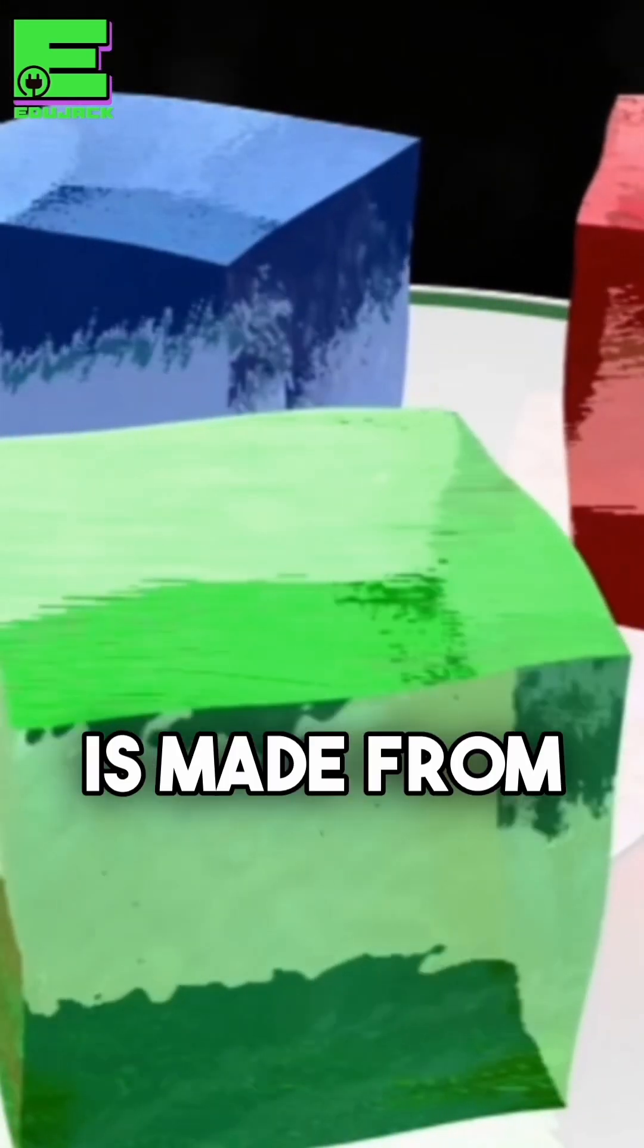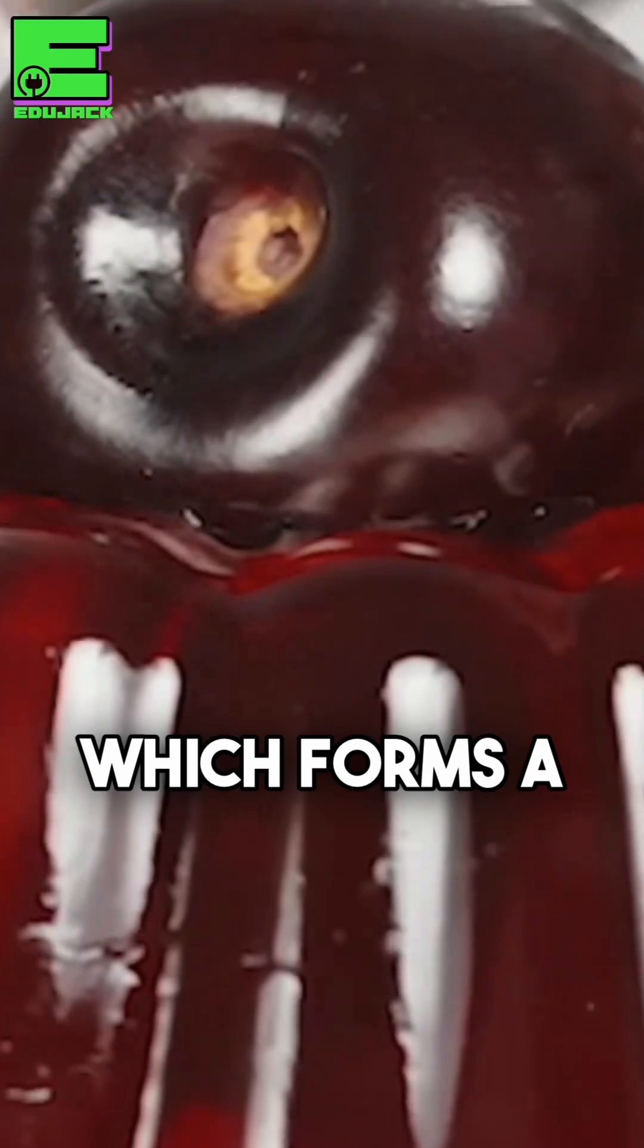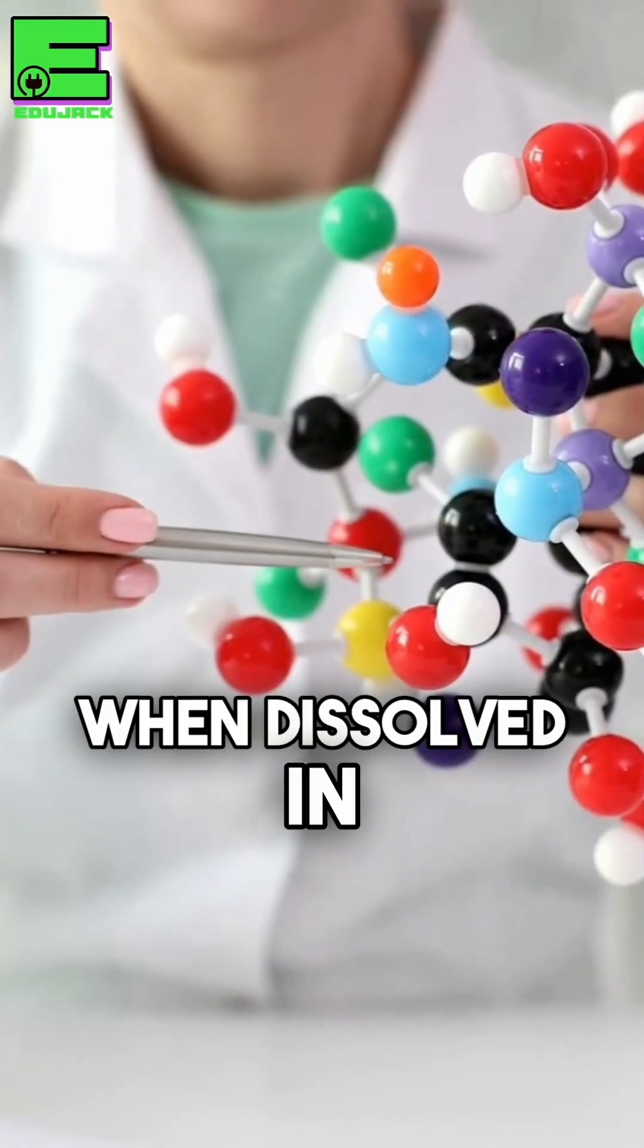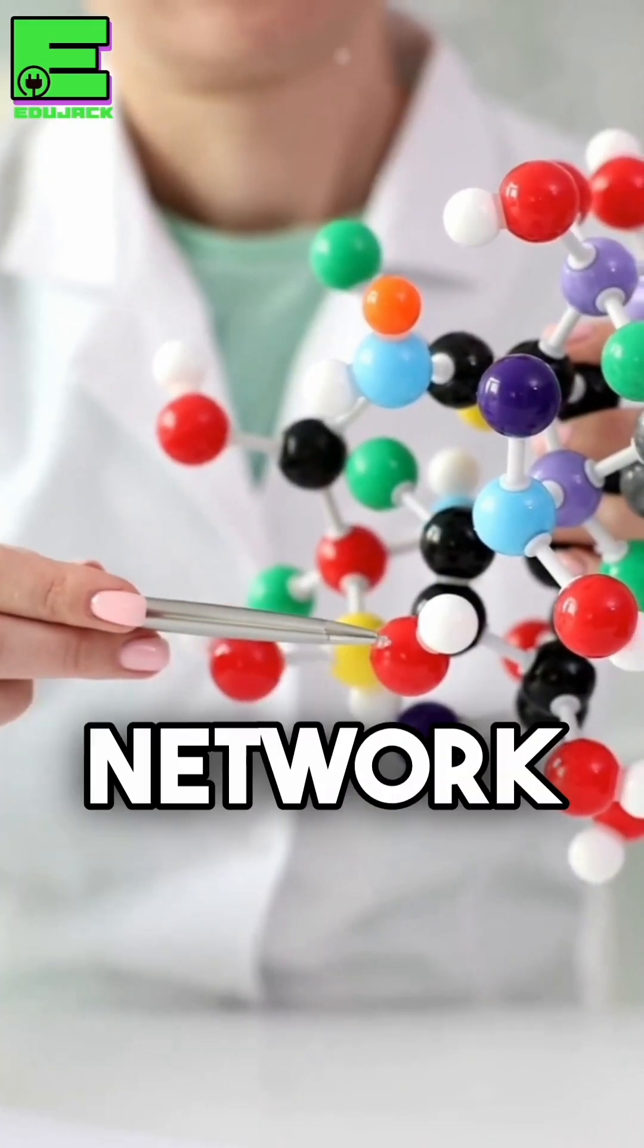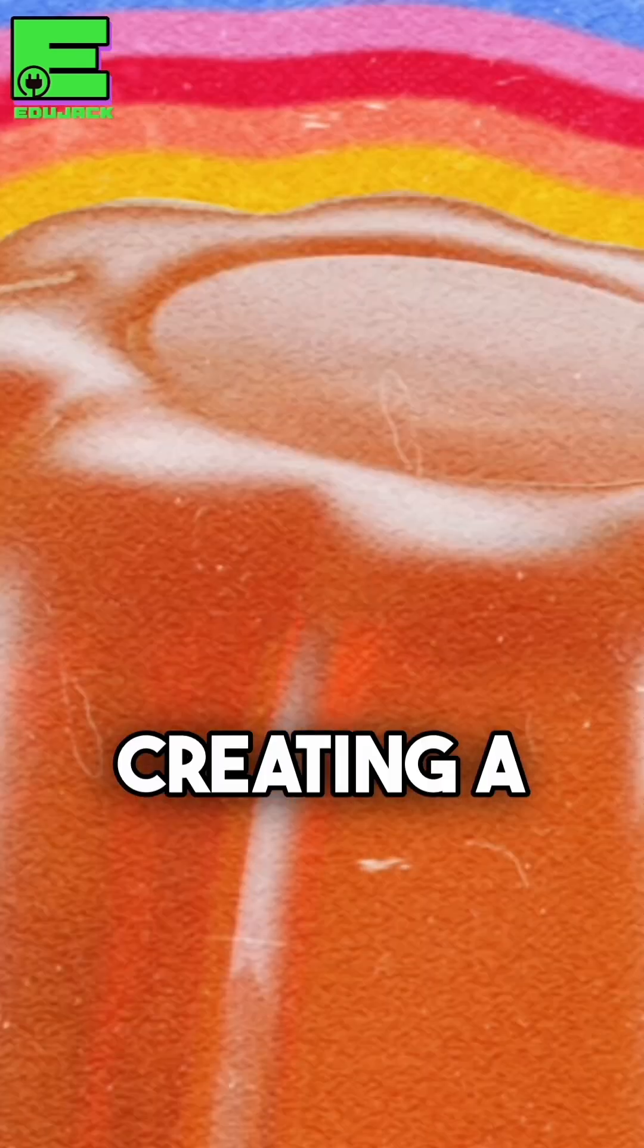Jell-O, or gelatin, is made from collagen, which forms a network of molecules when dissolved in hot water and then cooled. This network traps water, creating a gel.